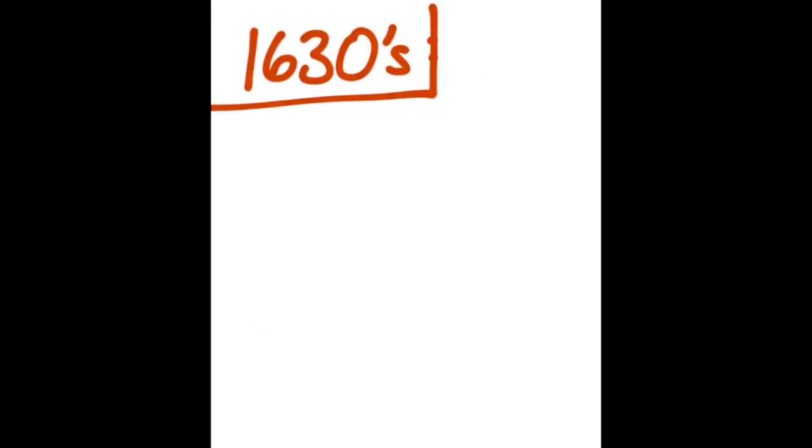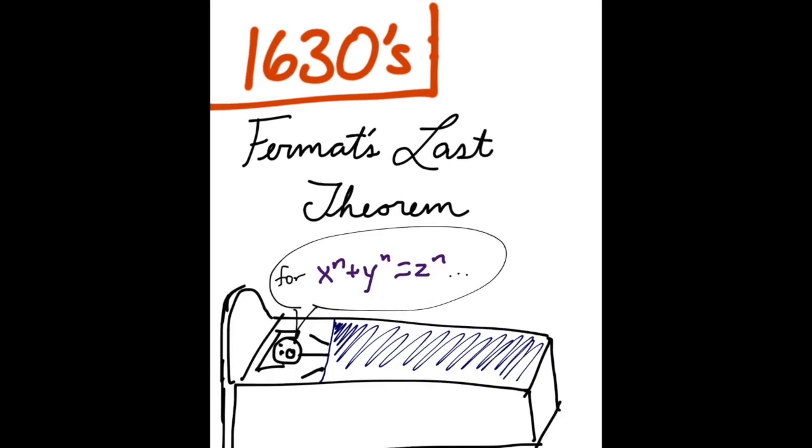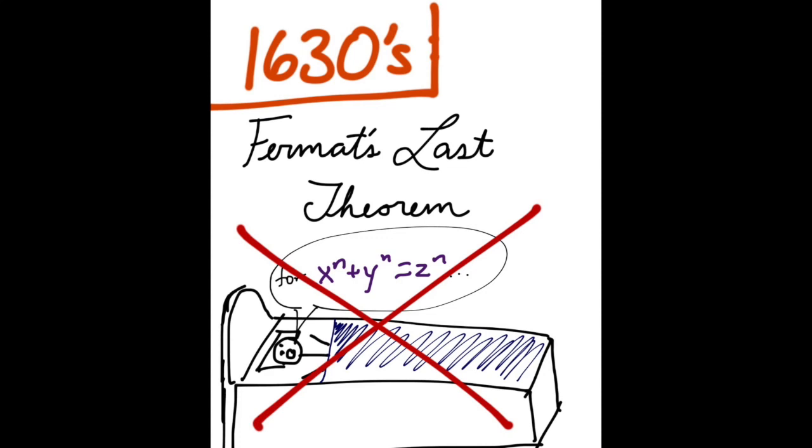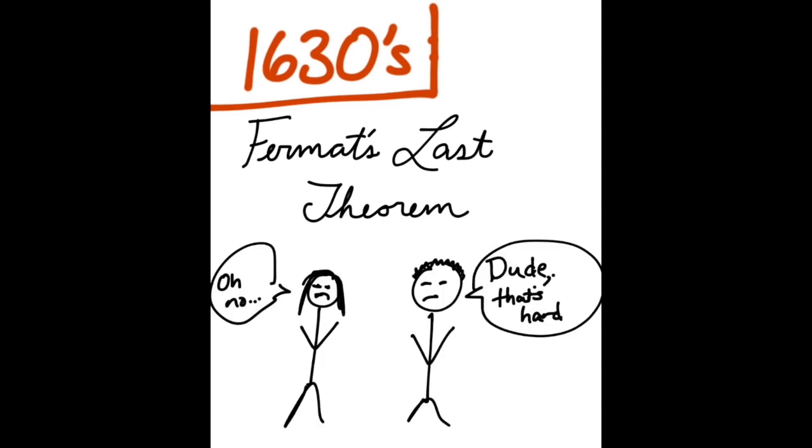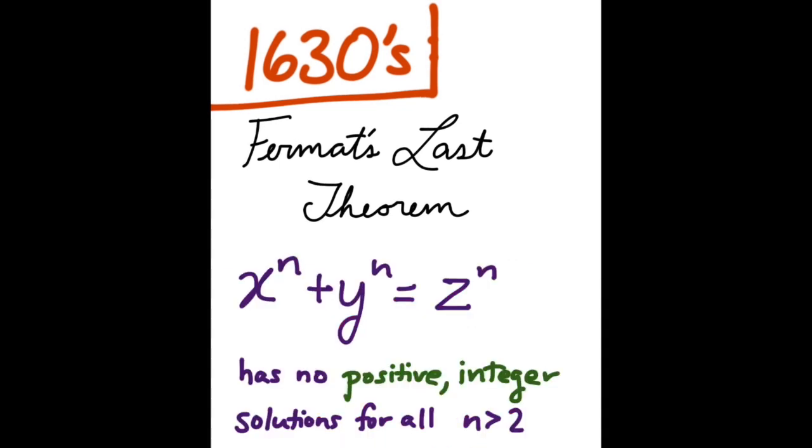In the 1630s, Fermat proposed something called his Last Theorem. He was on his deathbed and croaked out for x to the n plus y to the n equals z to the n. Okay, yeah, not exactly. His Last Theorem is so named because it has been notoriously difficult to prove. In fact, it wasn't proven until Andrew Wiles in 1995. It goes something like this: x to the n plus y to the n equals z to the n has no positive integer solutions for all n greater than 2.